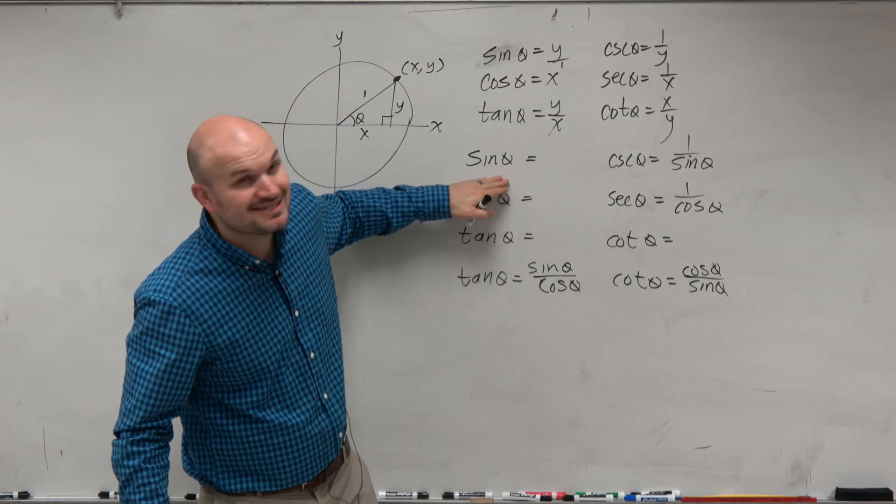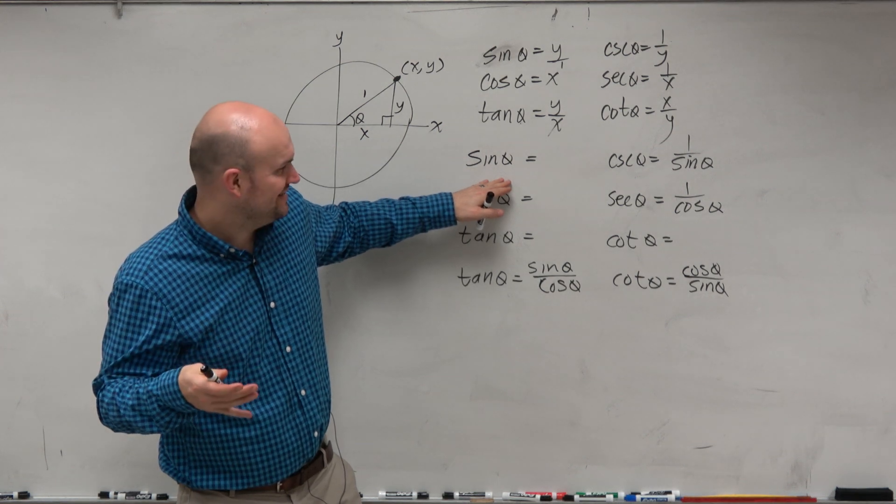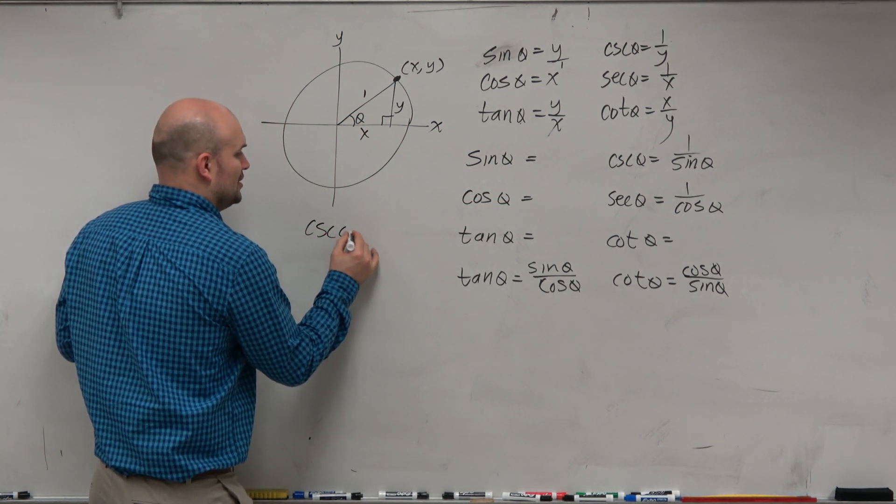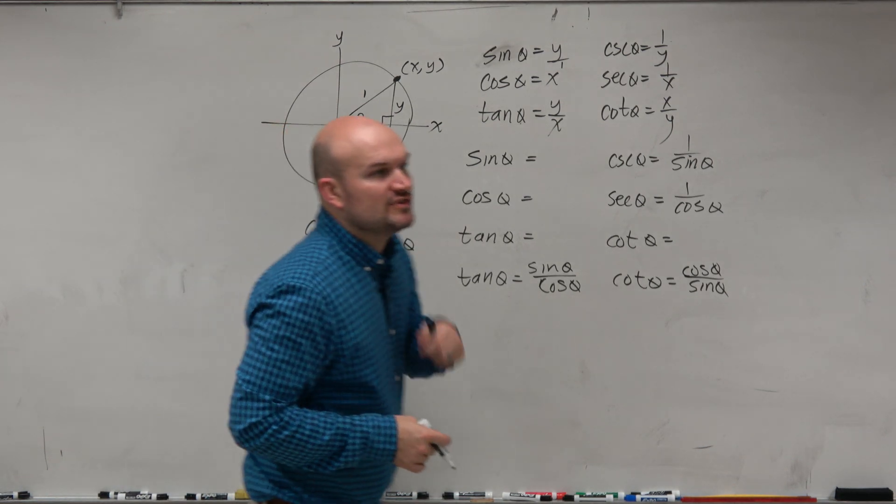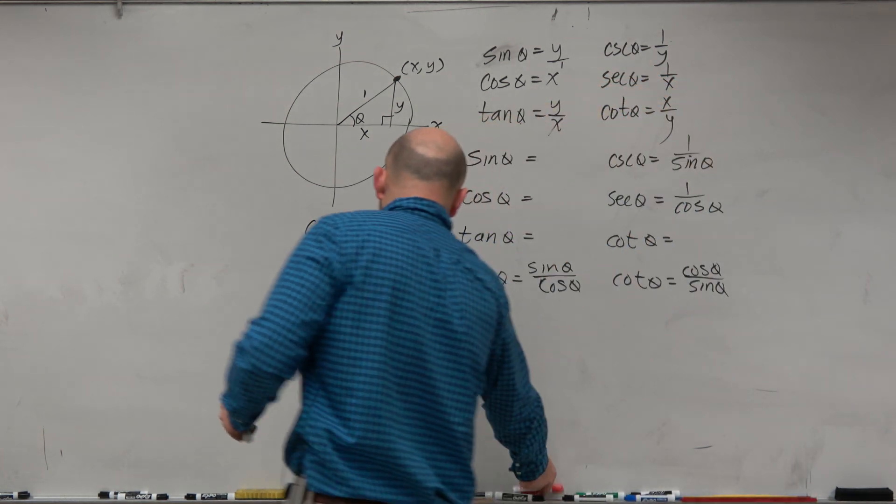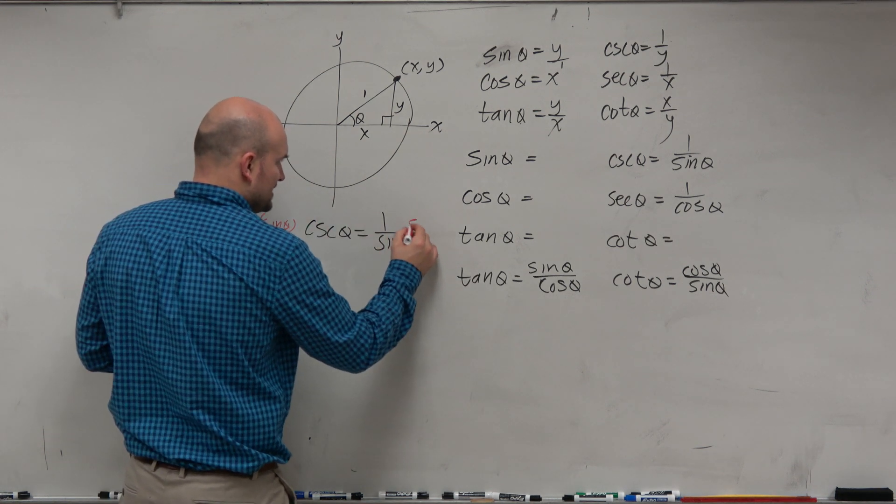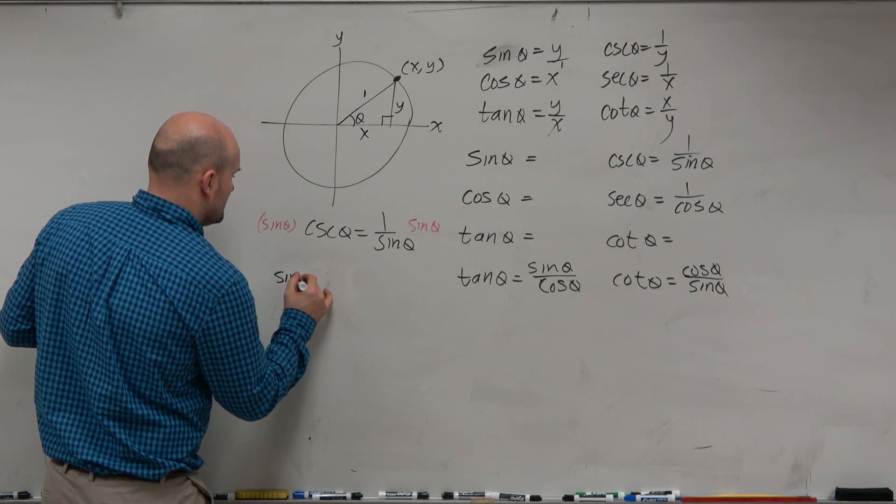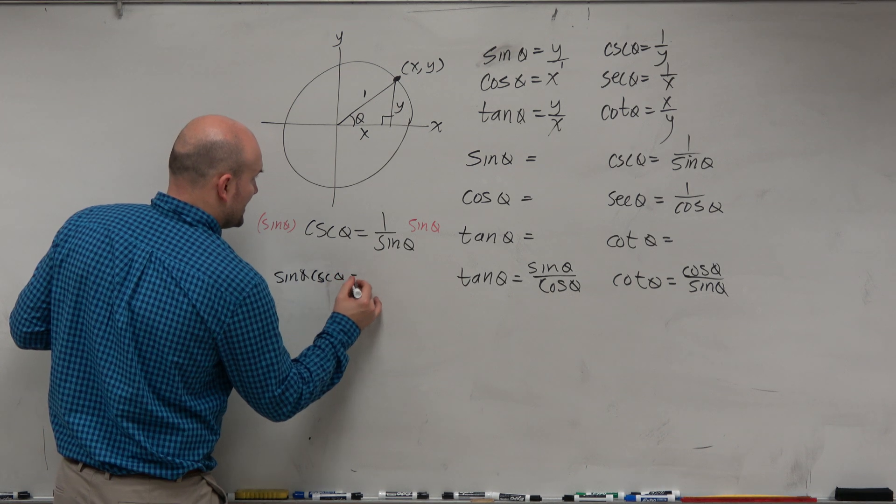If cosecant is 1 over sine and sine is the reciprocal of that, that means we could also write sine as OK, let's put it this way. Having trouble. Cosecant of theta equals 1 over sine. If I said solve for sine, what would you do? Well, you'd have to get sine off the denominator. So you'd multiply by sine of theta on both sides. So therefore, you'd now be left with sine of theta times cosecant of theta equals 1.